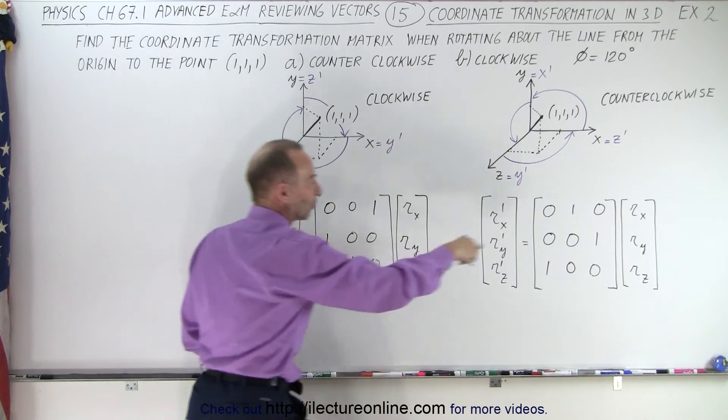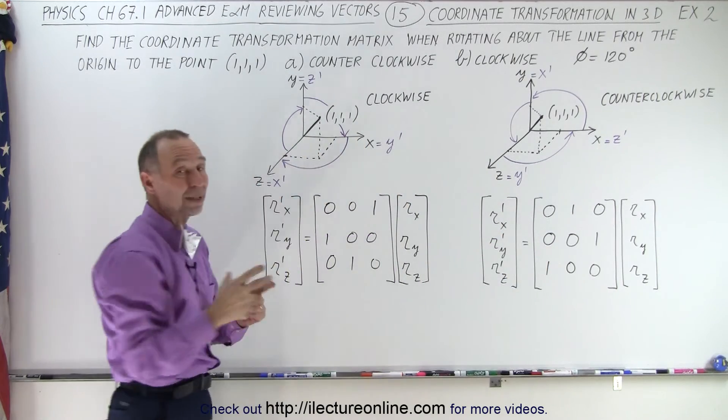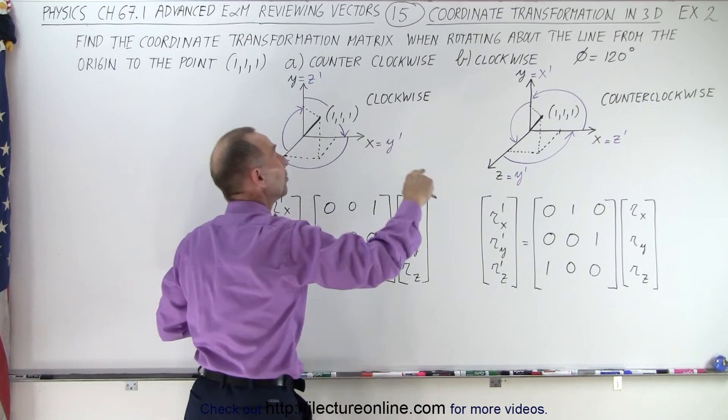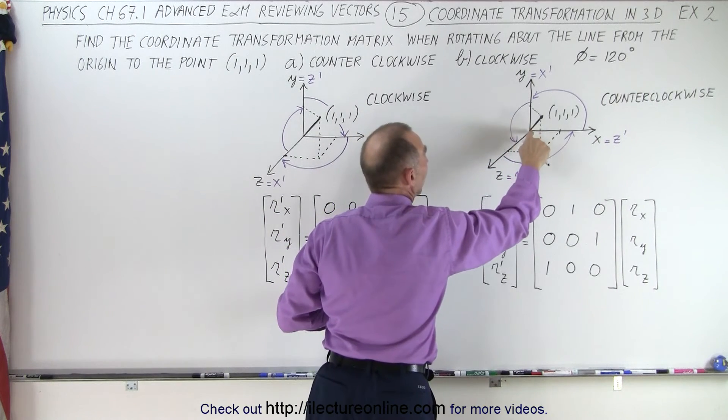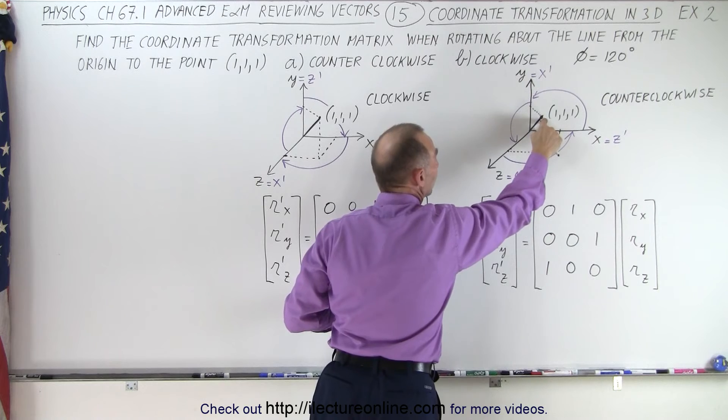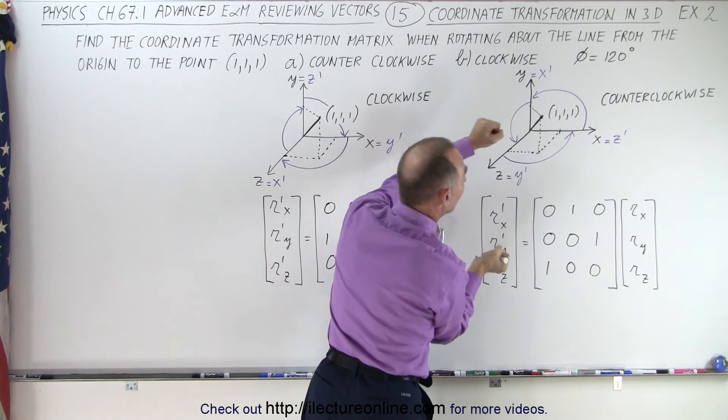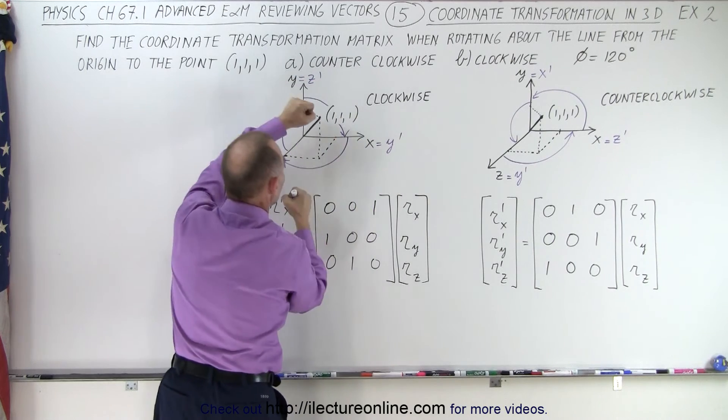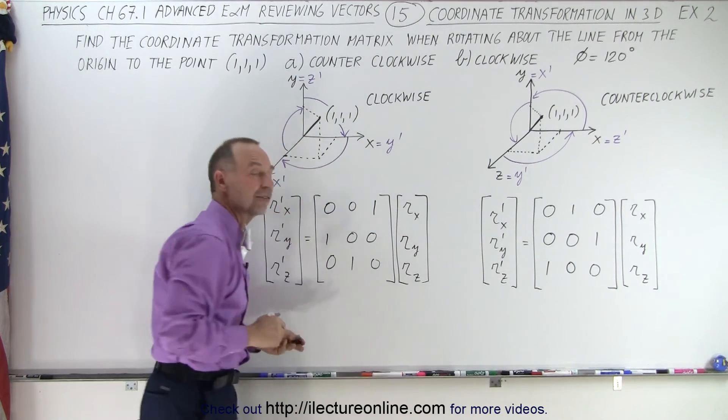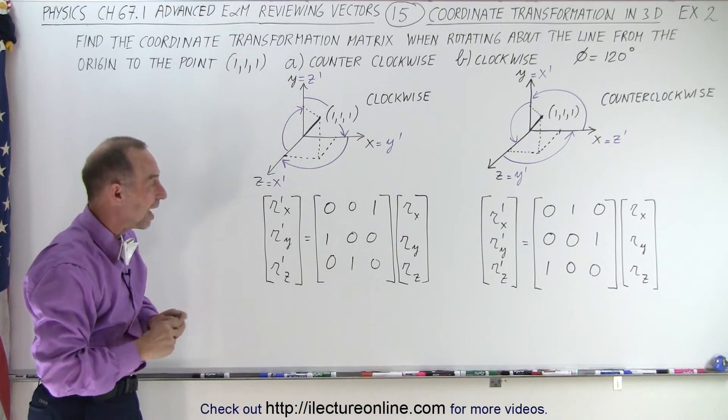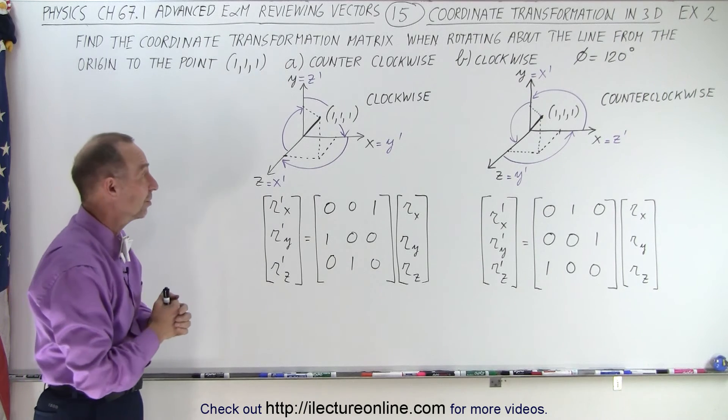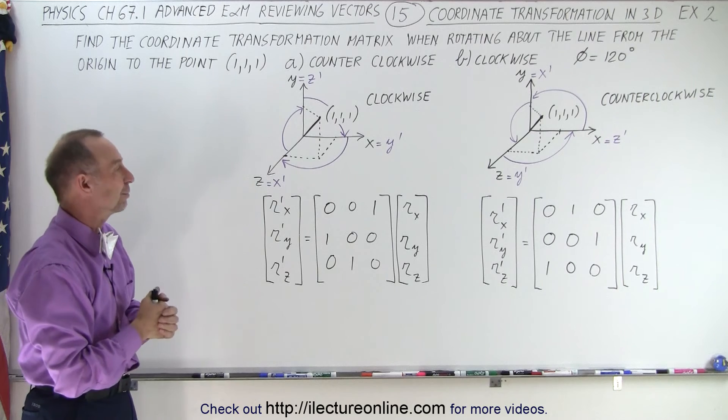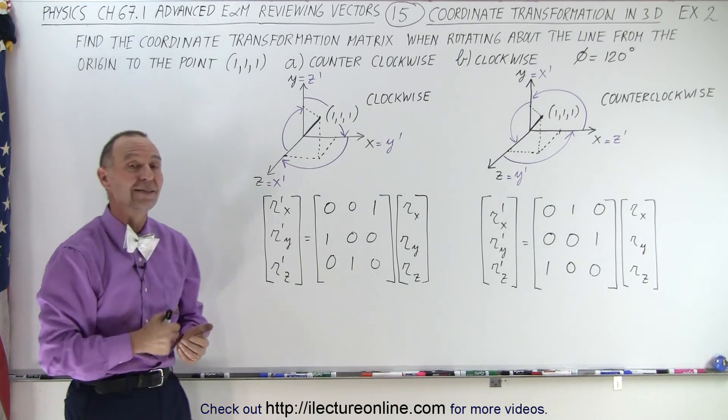So these are the two transformation matrices that will allow me to rotate the XYZ coordinate system 120 degrees about the line that goes from the origin to the point 111 at an angle outwards when I rotate 120 degrees counterclockwise and when I rotate 120 degrees clockwise. These are some nice simple examples to see how we can come up with transformation matrices to do that kind of rotation. And that is how it's done.